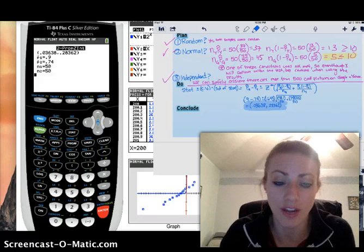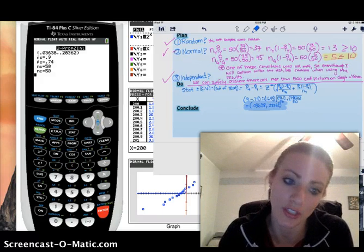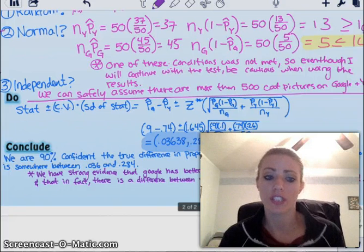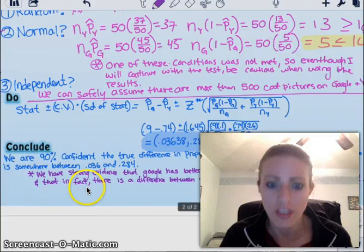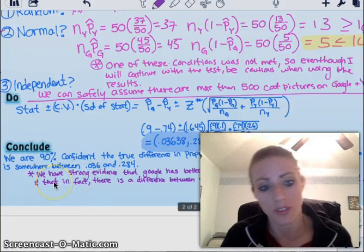So there's my confidence interval for difference. And you want to conclude in context. A strong conclusion is going to have your context and your confidence level and interval, but also says which one's better than which.